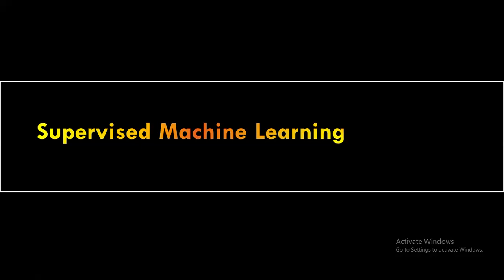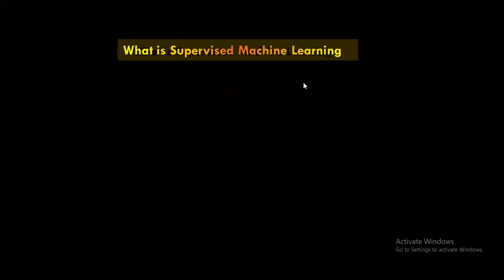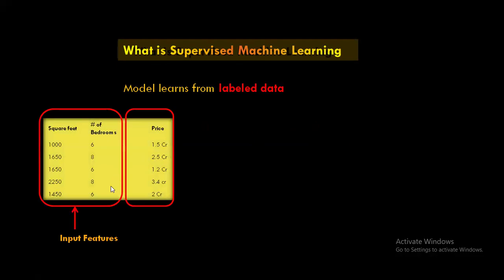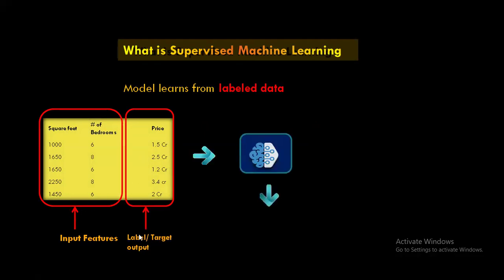Next, we will move ahead and take a look at supervised machine learning. What is supervised machine learning? We discussed in the previous session. It is a technique where a model learns from labeled data. This is where historical data contains both the input features and the labeled output feature. So using this historical data, which contains both the input and labeled output, we train our supervised machine learning model.